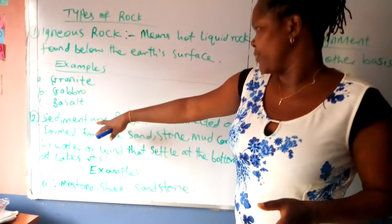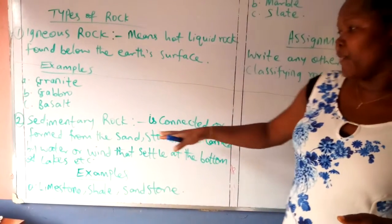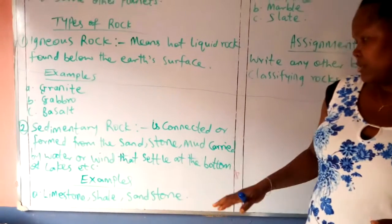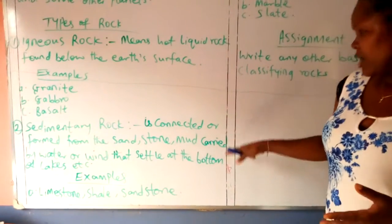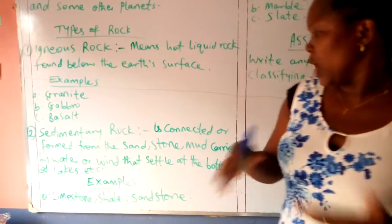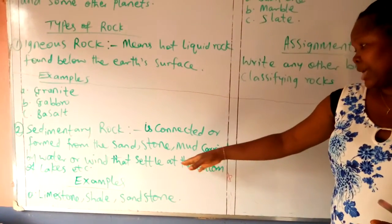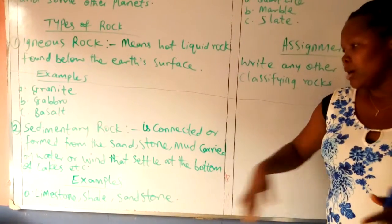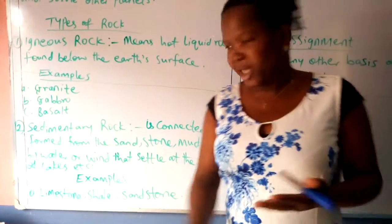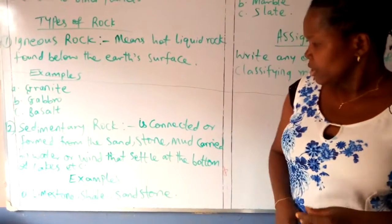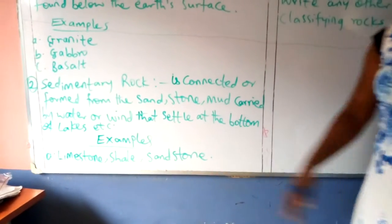We have sedimentary rock. It's collected or formed from sand, stone, mud, or clay. It's carried by water or wind that settles at the bottom of lakes, rivers, or water. Examples include limestone, shale, and sandstone.